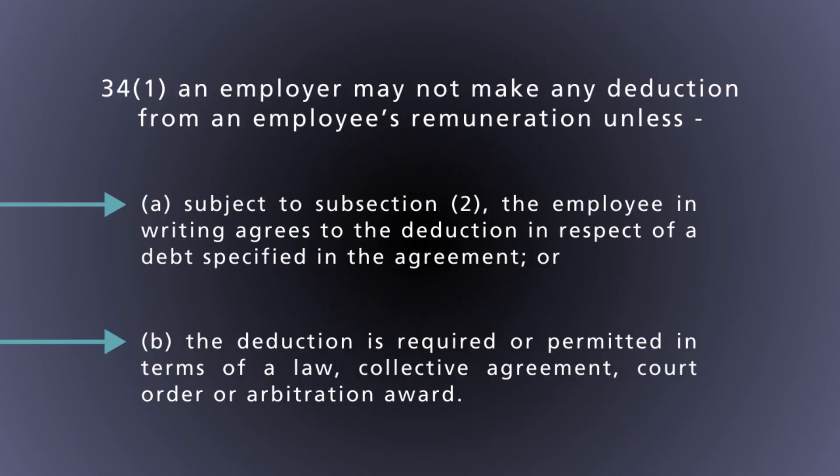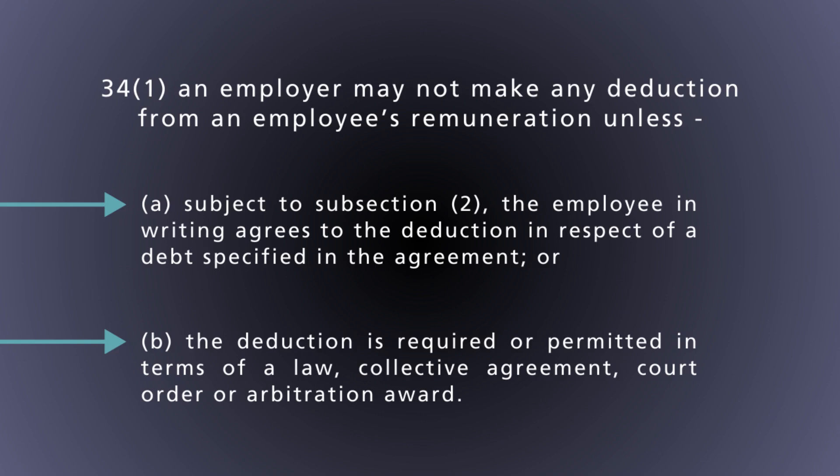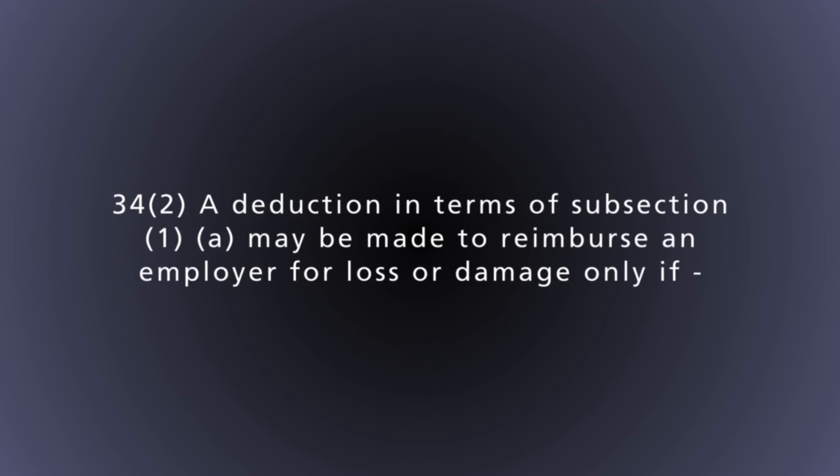Those are the two ways an employer is permitted to make deductions: either required or permitted in terms of a law, court order, collective agreement, or arbitration award — for which you do not need a specific written agreement — or a written agreement to a debt specified, which is subject to subsection 2. Now let's look at subsection 2. Section 34(2): a deduction in terms of subsection 1(a) to reimburse an employer for loss or damage may only be made if four conditions are met.